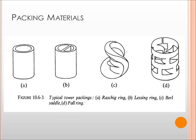Earlier, we have discussed the packing materials. This time, let us pay attention to their designs and geometry. The first two, A and B, or the Rasheg and Lessing rings, are relatively simpler kinds of packing materials in terms of design and geometry compared to C and D, the Burl Saddle and Paul Ring.